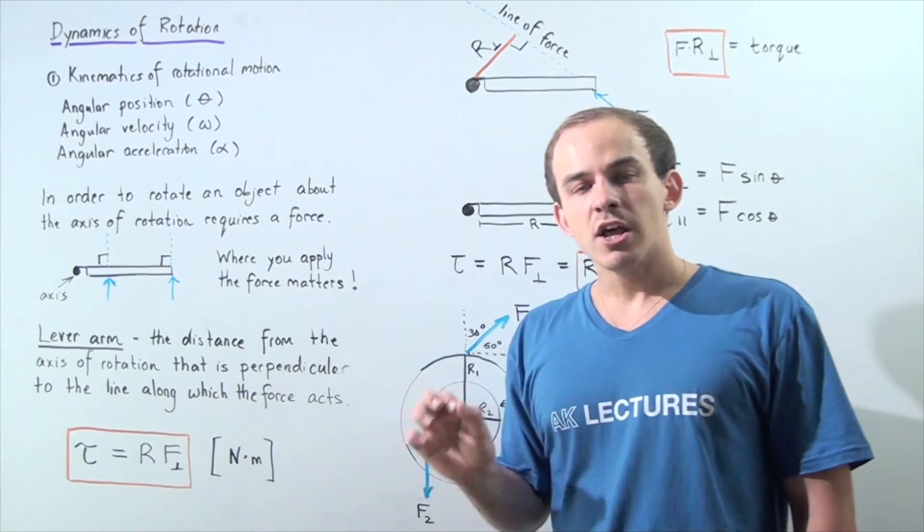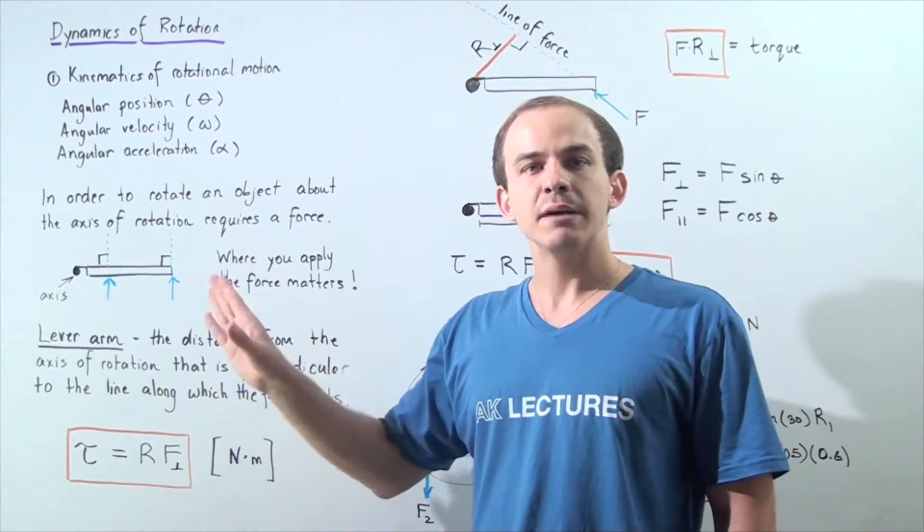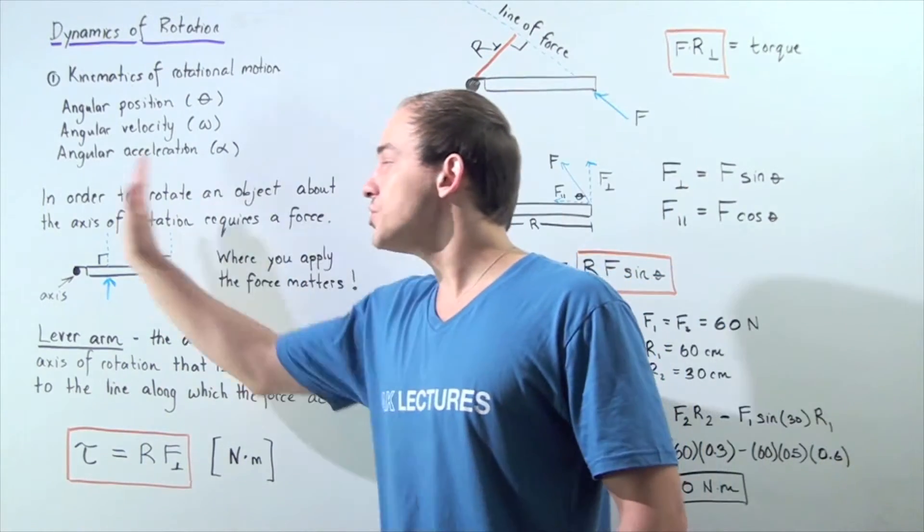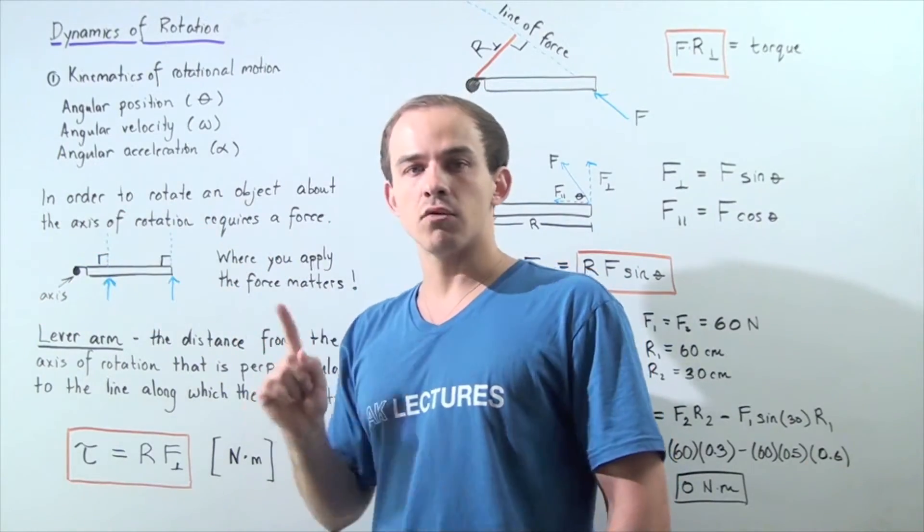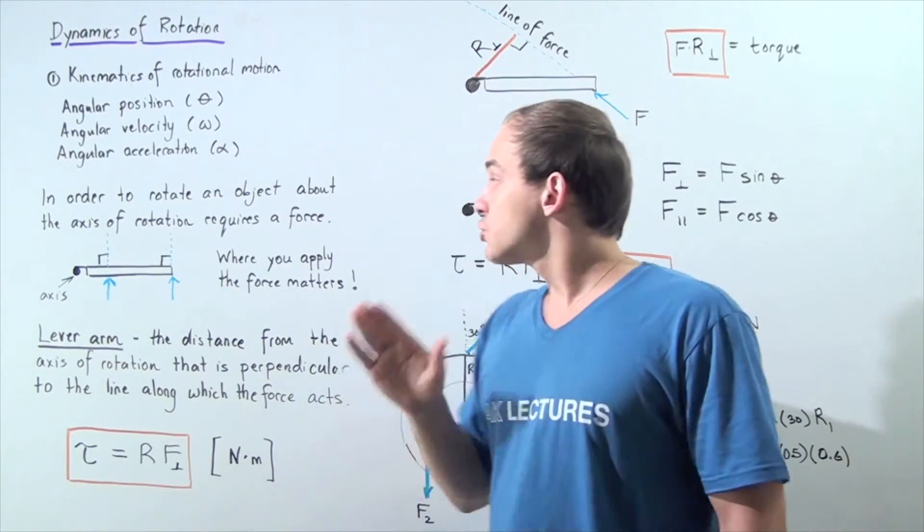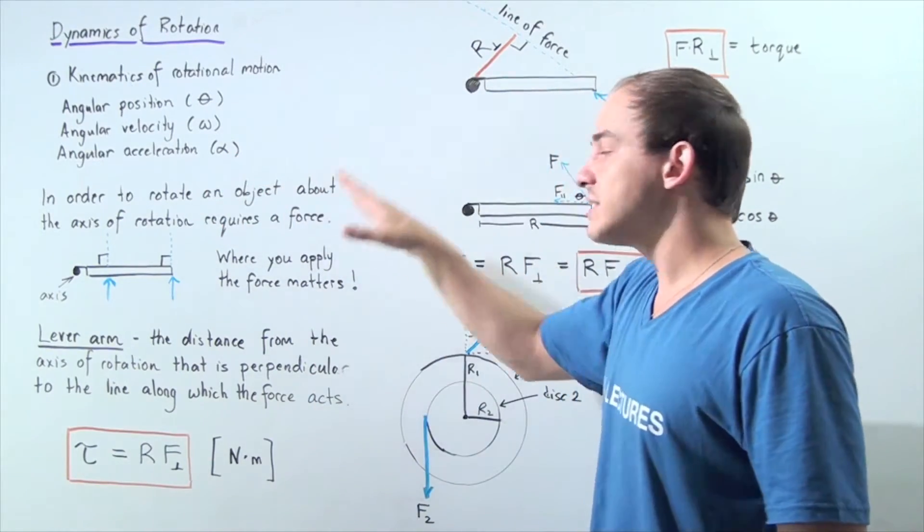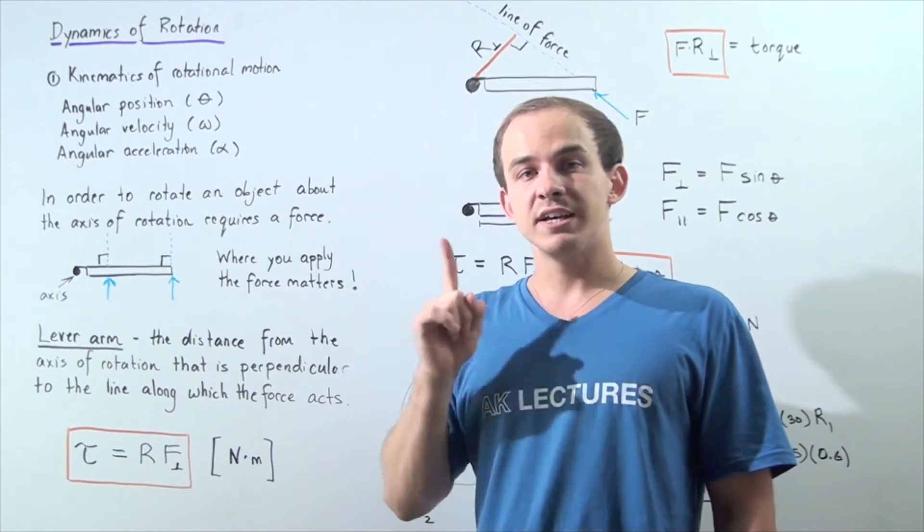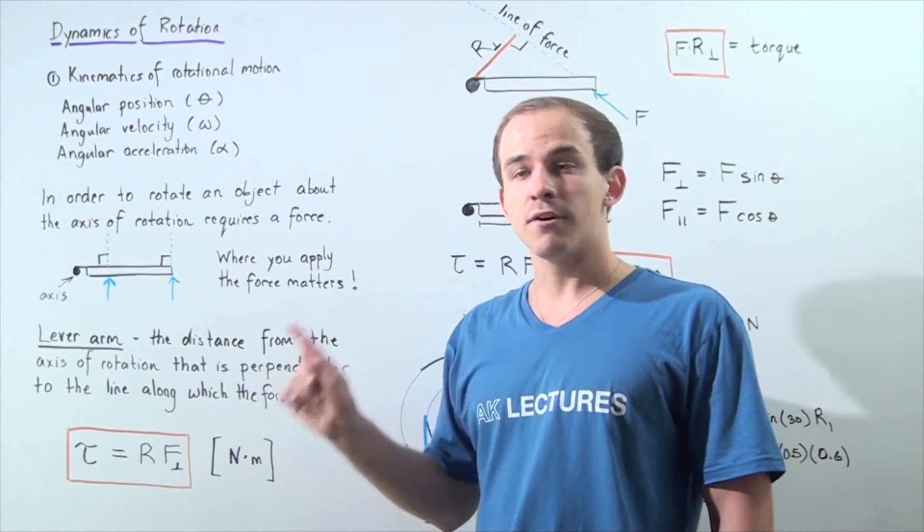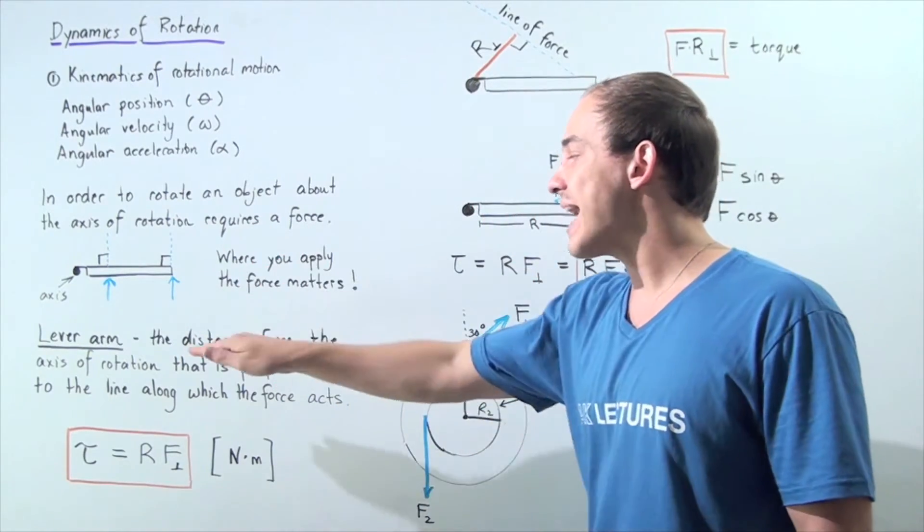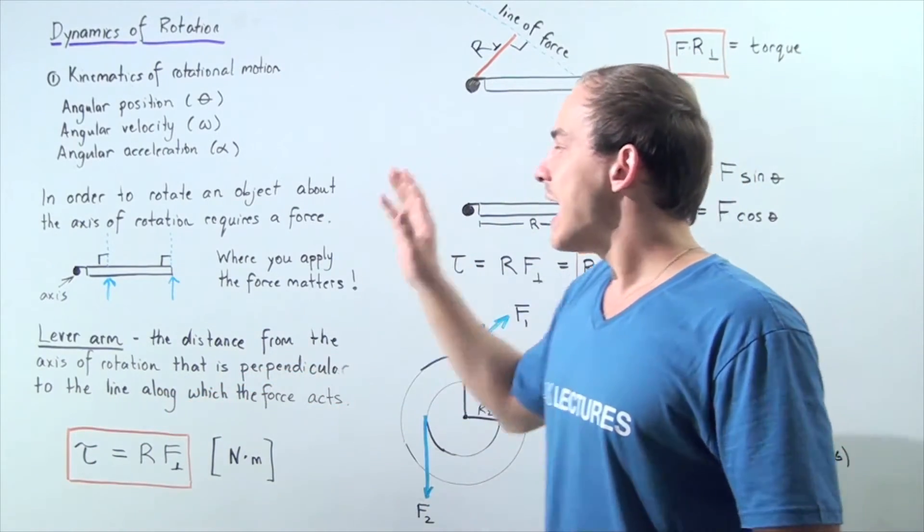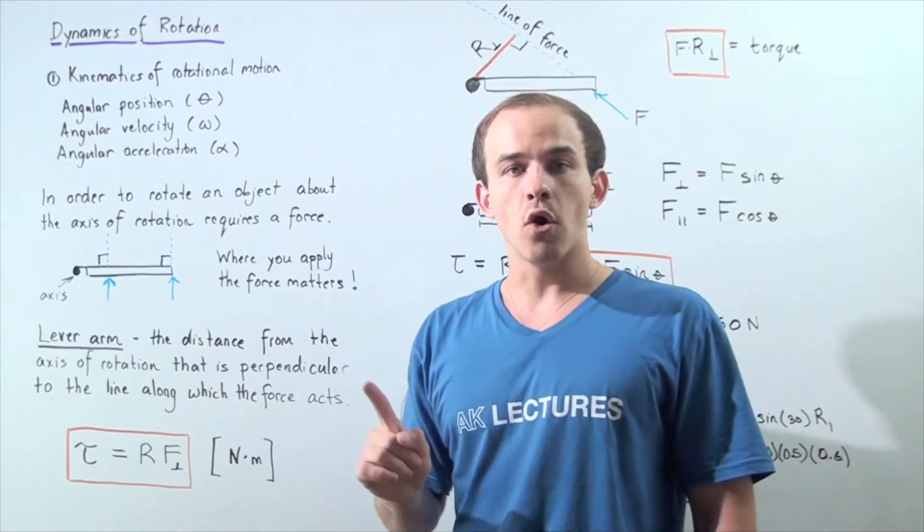Well, it actually turns out the location where I apply my force matters. If I apply the net force closer to the hinge, closer to the axis of rotation, well our angular acceleration will be smaller. So where you apply the force actually matters, and that's because of a concept known as the lever arm. The lever arm is the distance from the axis of rotation that is perpendicular to the line along which the force acts. And this line is known as the line of force.